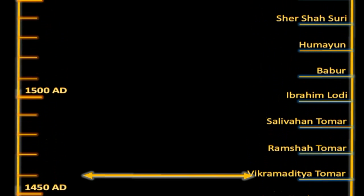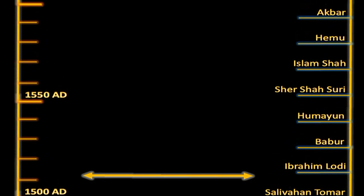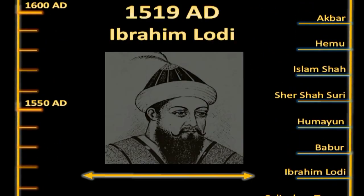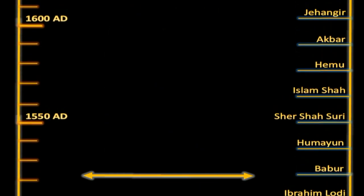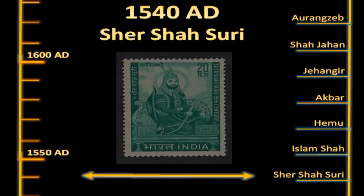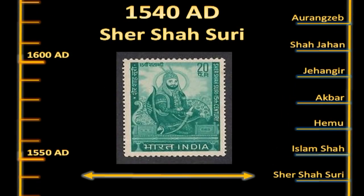Then came the rule of the Tomars. It was only in 1519 AD that Ibrahim Lodi of the Lodi dynasty won control of the fort. After his death, Mughal Emperor Babur manipulated the situation and took control. But with his son Humayun's defeat at the hands of Sher Shah Suri, the fort came under the reign of the Suri dynasty. After Sher Shah Suri's death in 1540 AD, his son Islam Shah shifted his capital from Delhi to Gwalior, as it was considered safe from frequent attacks from the west.